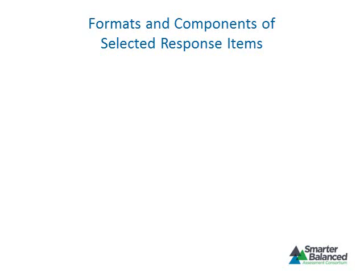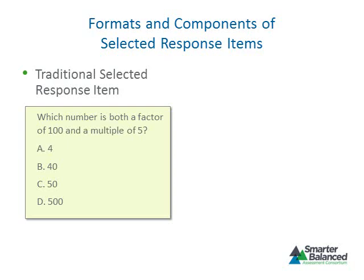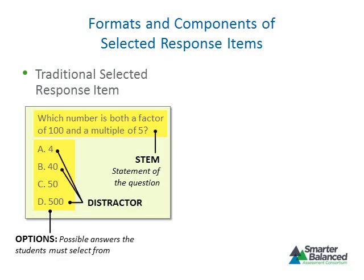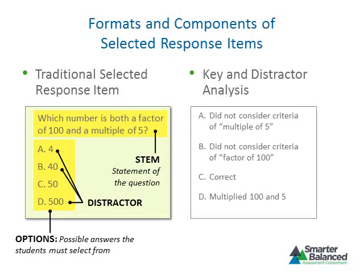The Smarter Balanced assessment will use both traditional and non-traditional selected response items. A traditional multiple-choice item has a stem and four options. The stem is the statement of the question to which the student responds, and the options are possible answers from which the student must select. Distractors are the incorrect options. A key and distractor analysis accompanies each item — the key identifies the correct response, and a rationale for each incorrect response is provided, based on likely errors students will make.